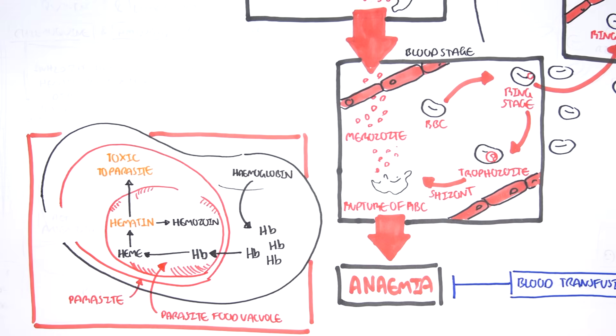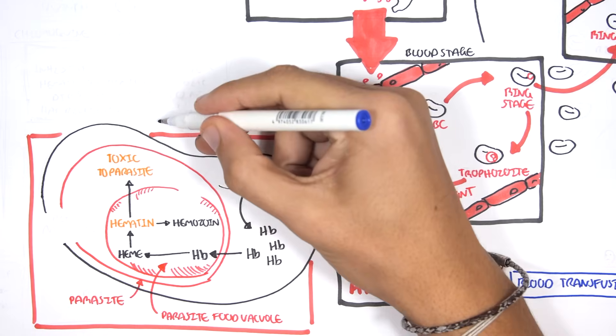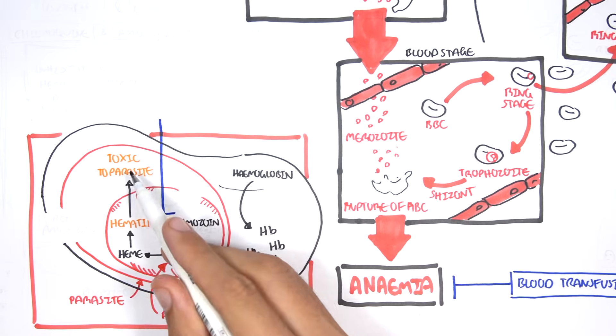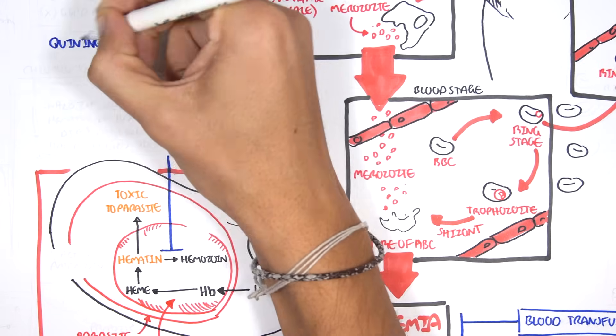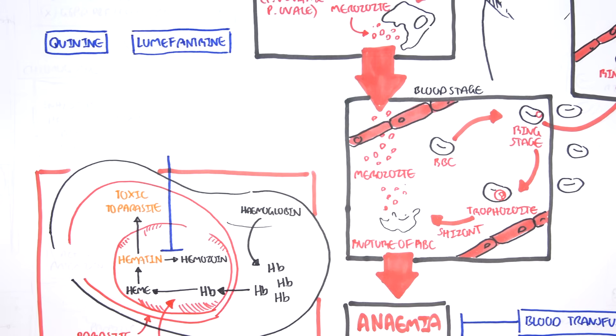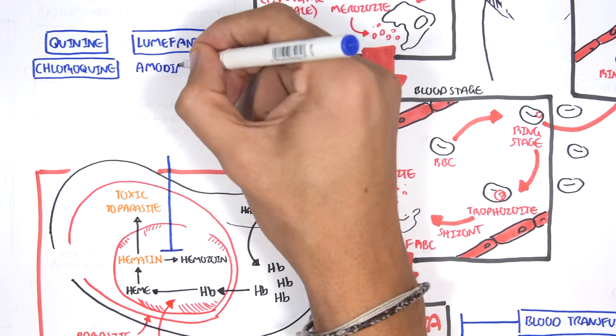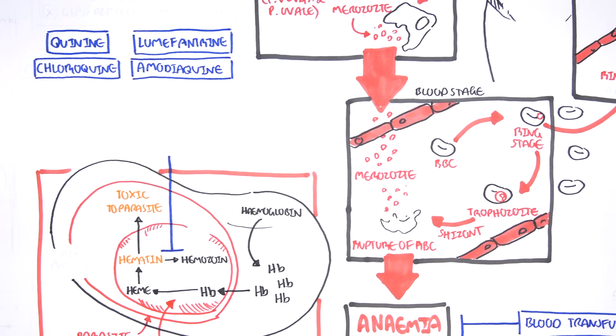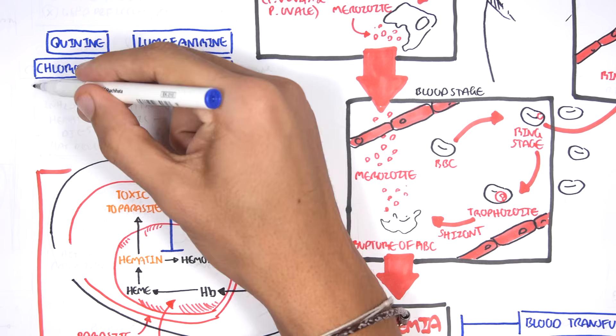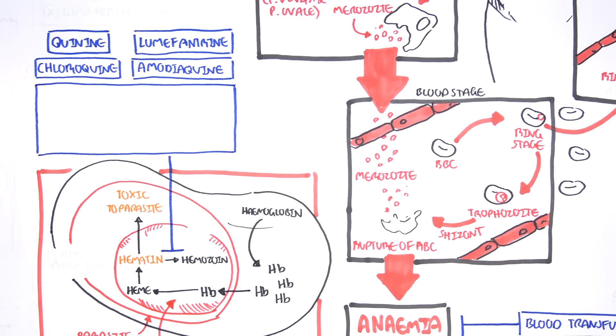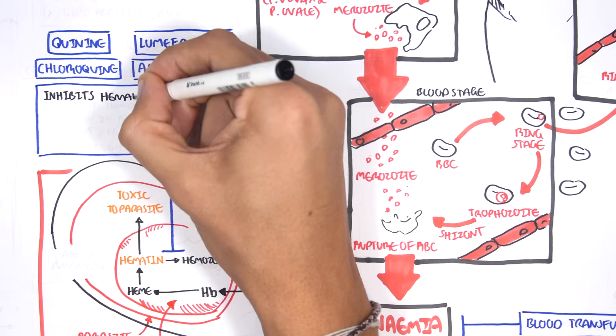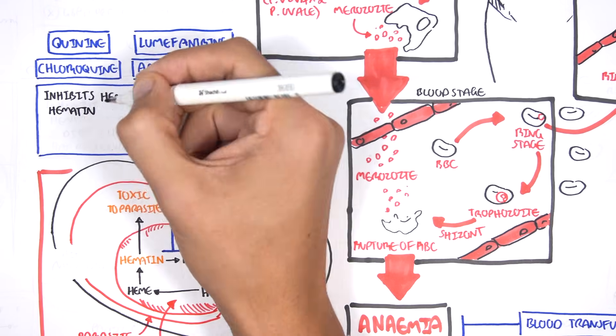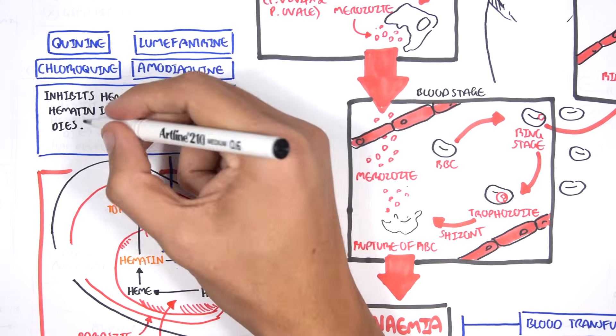The drug quinolones, the drugs under quinolones, they actually target this conversion from hematin, which is toxic to the parasite, to hemozoin. These quinolones are quinines, lumefantrine, chloroquine, and amodiaquine. These quinolones essentially inhibit hematin to become hemozoin. Thus, if hematin is not converted, it will be very toxic because hematin is toxic to the parasite and the parasite dies.